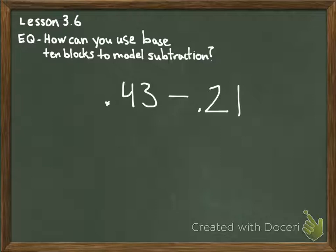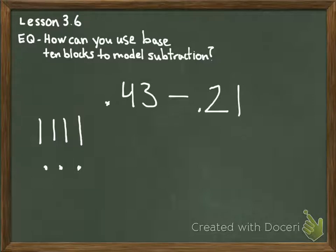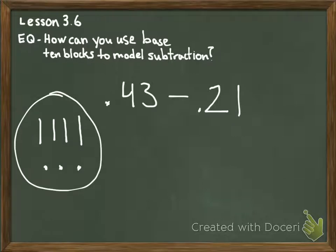We have an example: 43 hundredths minus 21 hundredths. When we model subtraction using base 10 blocks, we create four flat pieces, which represent the 4 tenths. For the hundredths, we use single cubes as dots for the hundredths pieces. This represents 43 hundredths.